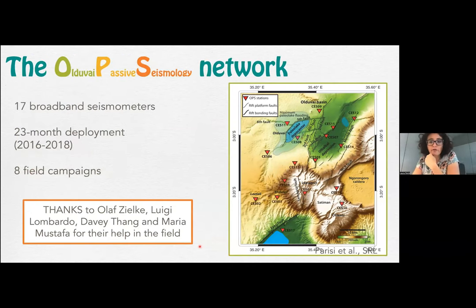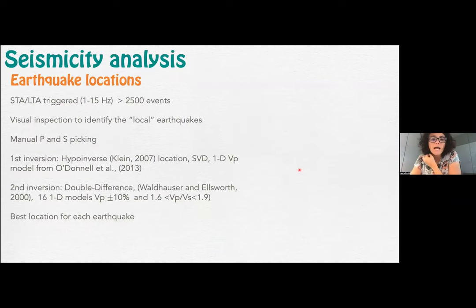To study the intricate fault system in the Olduvai Basin, we carried out a passive seismic experiment that included 17 broadband seismometers that ran for a total of almost two years. The continuous waveform was screened with the STA-LTA algorithm. This brought us to locate more than 2,500 events. Because of the vicinity of the main rift, all these events were kind of noise because we were interested in the events of the off-rift system.